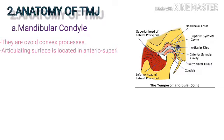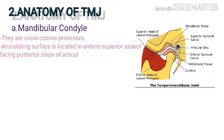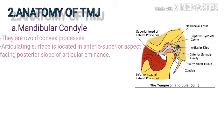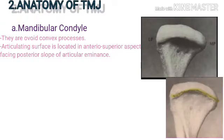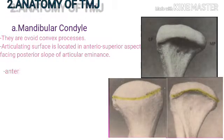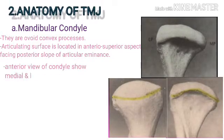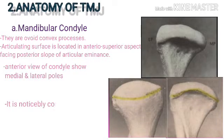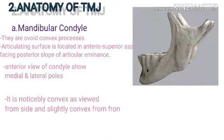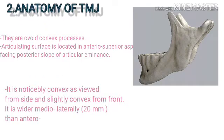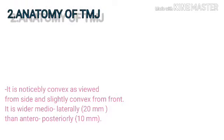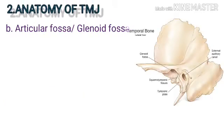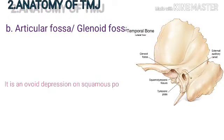The mandibular condyles are ovoid convex processes; their articulating surface is located on the anterior superior aspect, facing the posterior slope of the articular eminence. In the anterior view, the condyle has medial and lateral poles. It is notably convex when viewed from the side and slightly convex from the front; it is wider mediolaterally than anteroposteriorly.